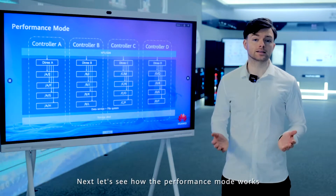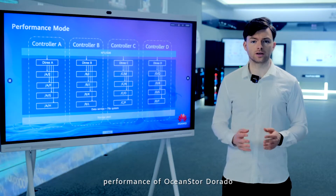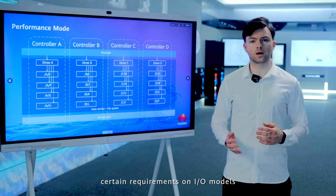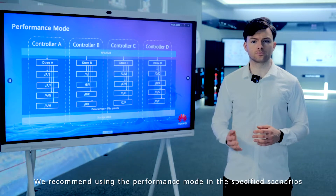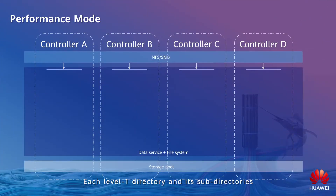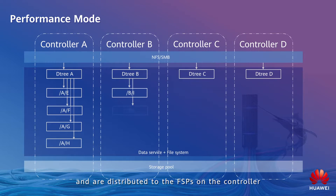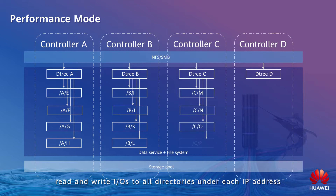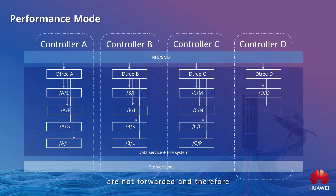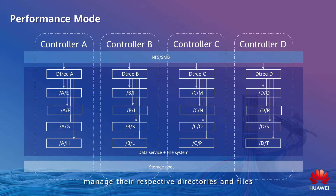Next, let's see how the performance mode works. This mode helps maximize the read and write performance of OceanStore Dorado. However, certain requirements on IO modules must be met for using the performance mode, so we recommend using it in specified scenarios. Each Level 1 directory and its sub-directories are mounted to the same controller where the IP address resides and are distributed to the FSPs on that controller. In this way, read and write IOs to all directories under each IP are not forwarded, and therefore the best read and write performance is obtained. This mode meets the demands of high performance in scenarios where all clients manage their respective directories and files.